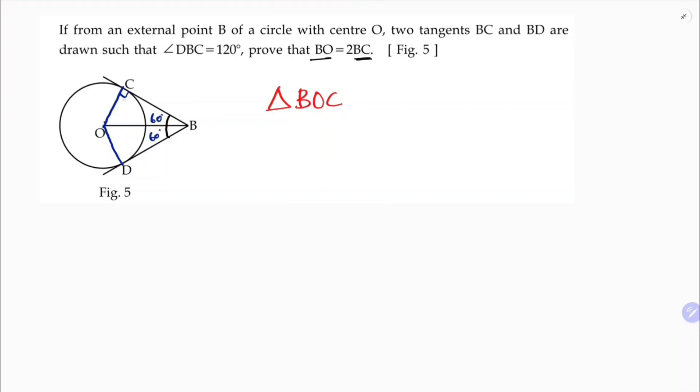As the right angle is here, BO will be the hypotenuse here. BO will be the hypotenuse and BC will be—as theta is here, the angle is here—this will be adjacent and OC will be opposite.